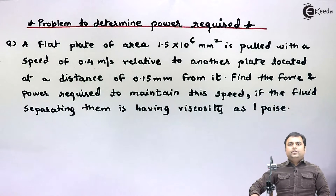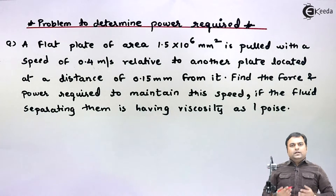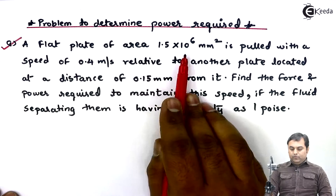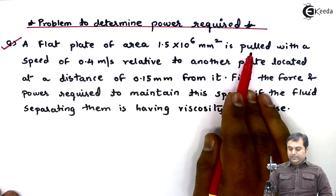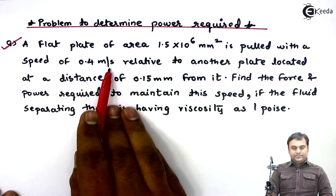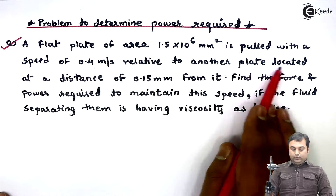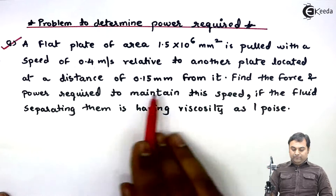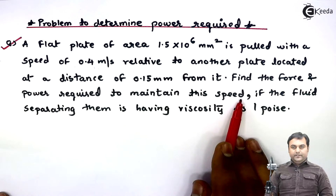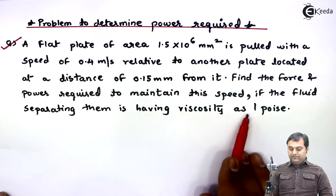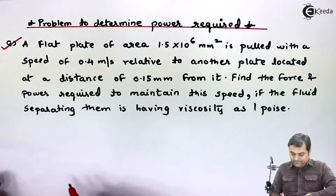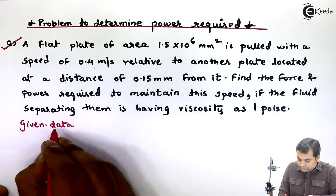Hello friends, in this video we will see how to calculate power required. Let's read the question: a flat plate of area 1.5 × 10⁶ mm² is pulled with a speed of 0.4 meter per second relative to another plate located at a distance of 0.15 mm from it. Find the force and power required to maintain this speed if the fluid separating them has a viscosity of one poise.